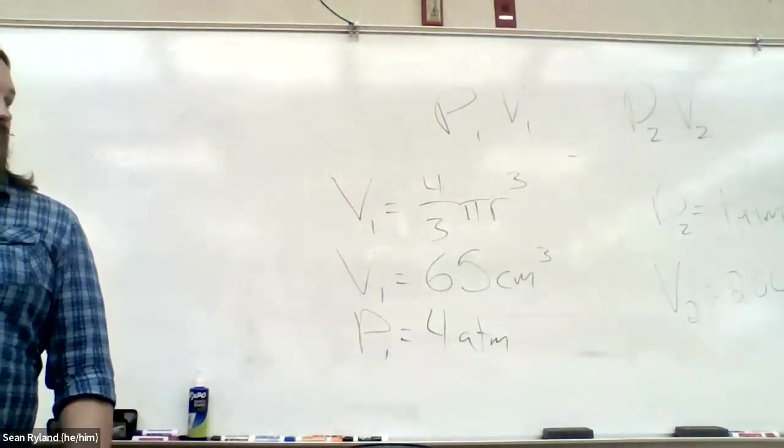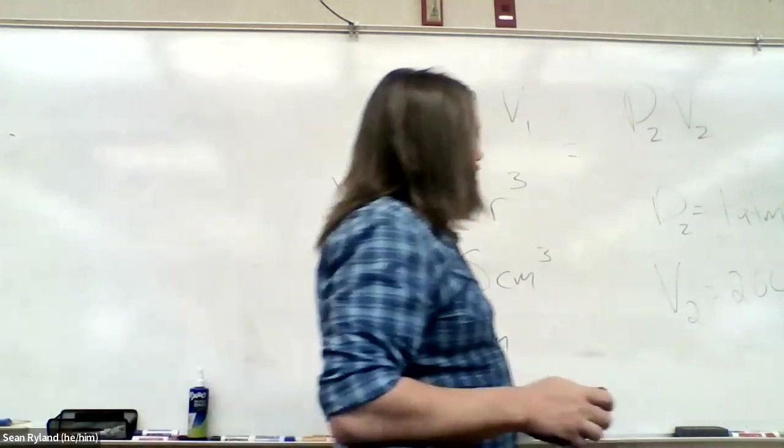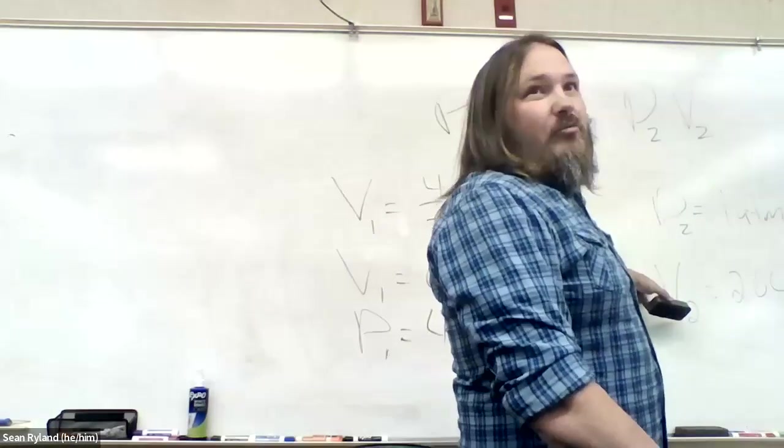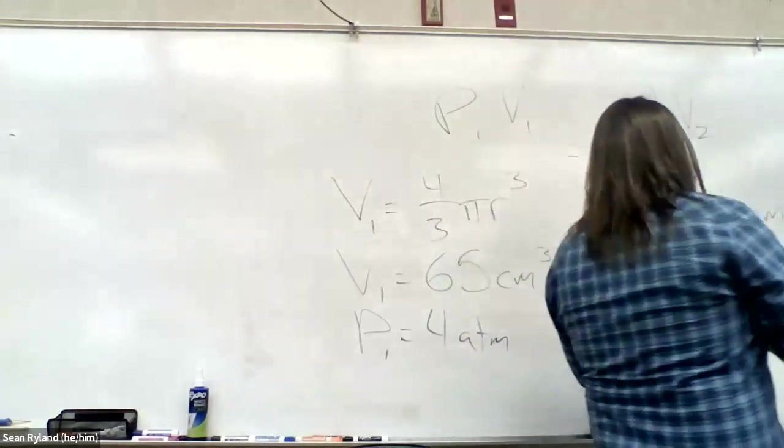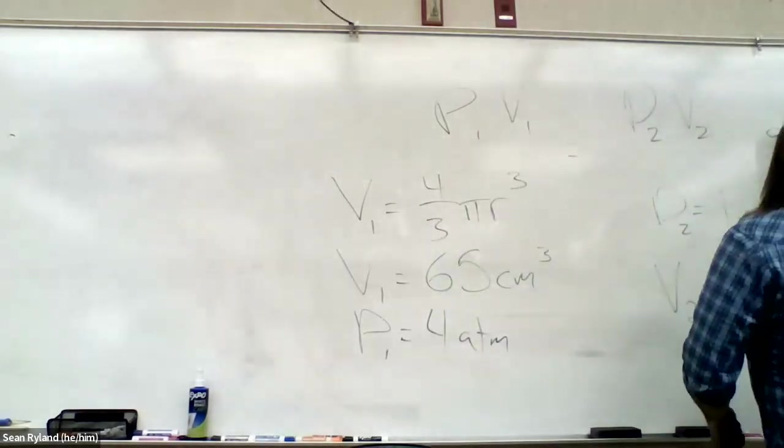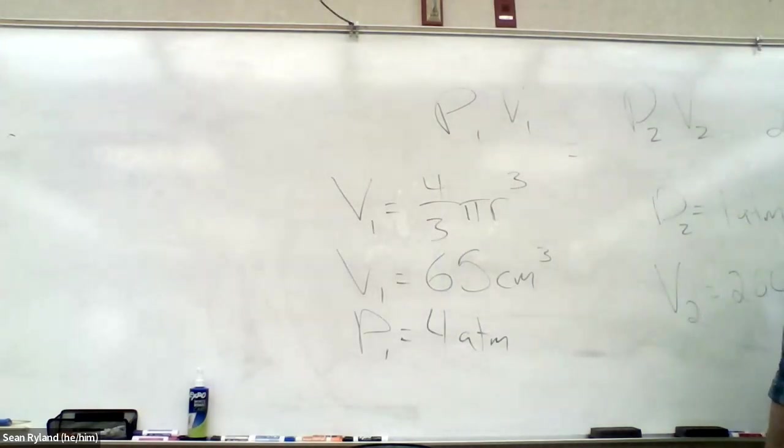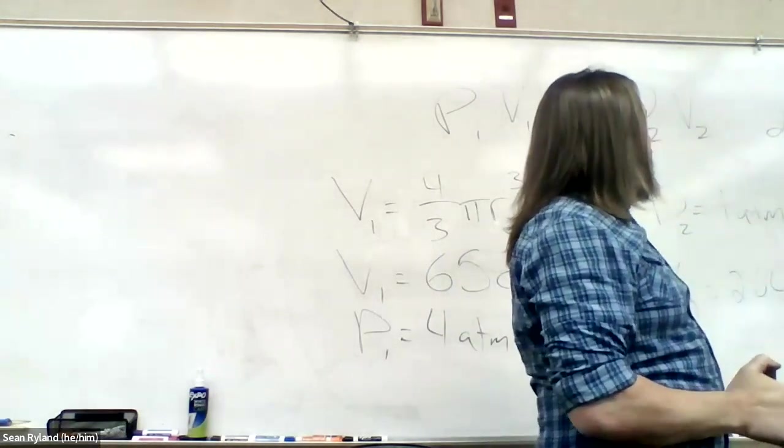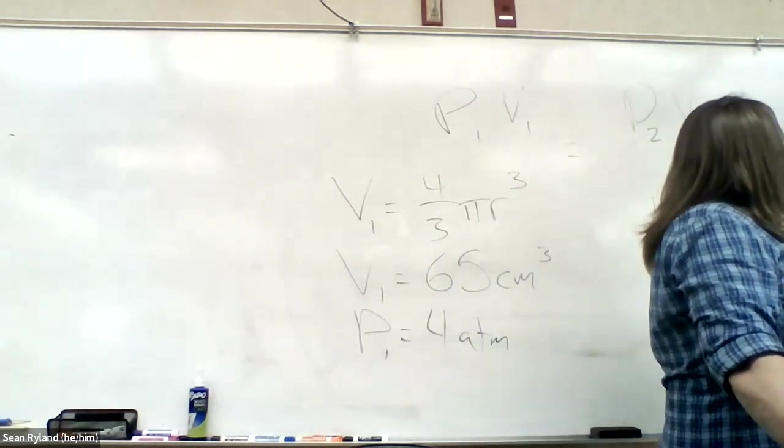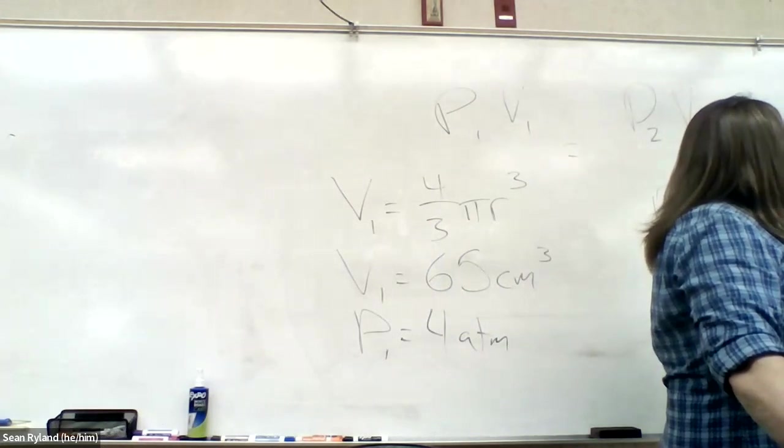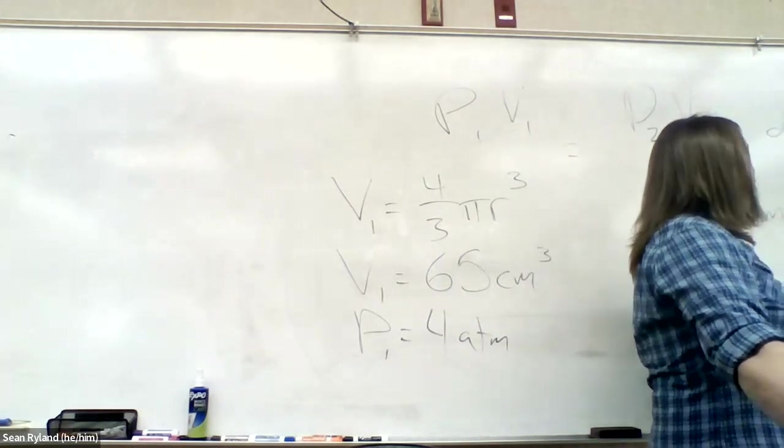That's the final volume, but we actually want the radius. So now we just have to solve for r. 260 centimeters cubed equals 4 thirds pi r cubed. Solve for r. Get something like pretty close to 4. Yeah, that makes sense. That's a little over 4.